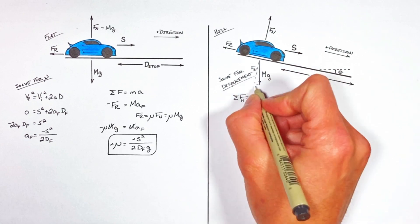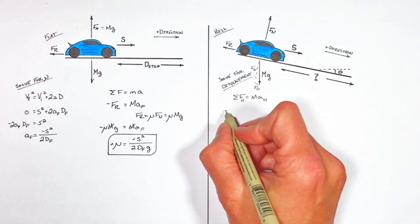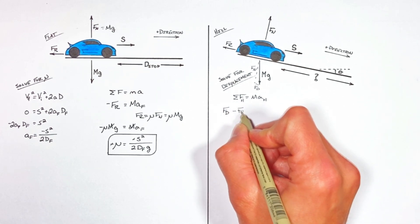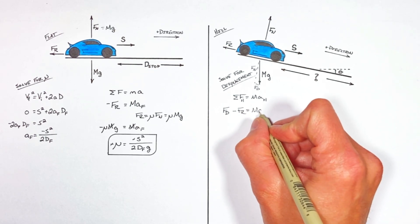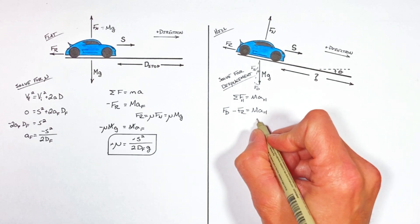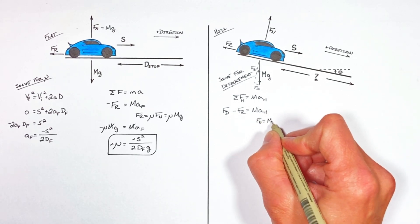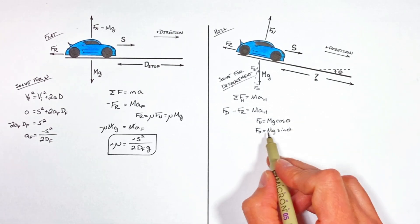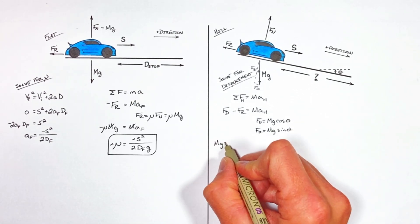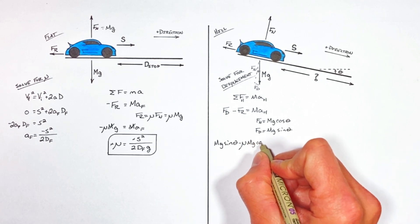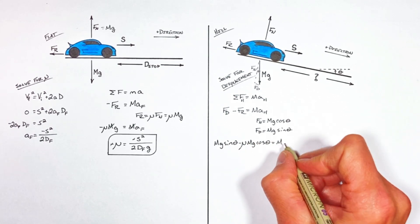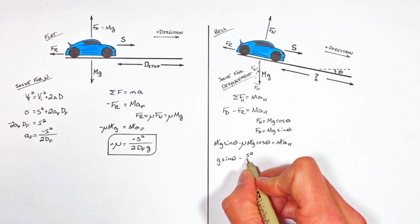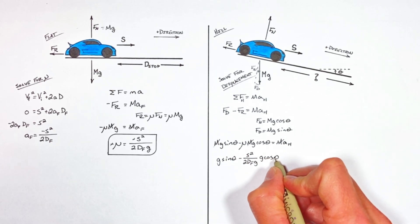That component of gravity perpendicular to the hill is the normal force. Applying Newton's second law within the plane of the hill, we have the force down the hill — that's the positive direction — minus the friction force, which is acting up the hill in the negative direction. For a block on a hill, the normal force is given by mg cosine theta, and the force down the hill is given by mg sine theta. Substituting those terms into Newton's second law and into the friction force, the mass of the car conveniently cancels out. Subbing in our coefficient of friction found from the level surface, we get an expression for the acceleration of the car on the hill.